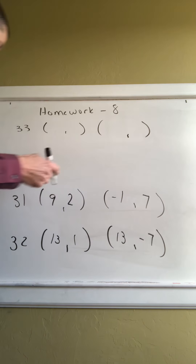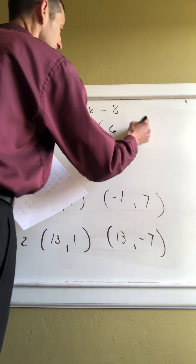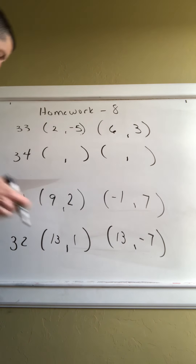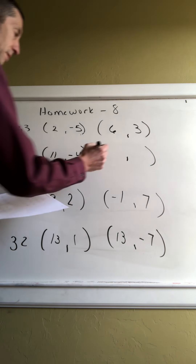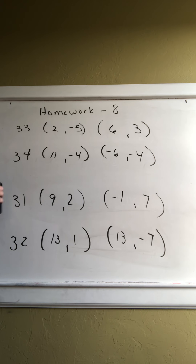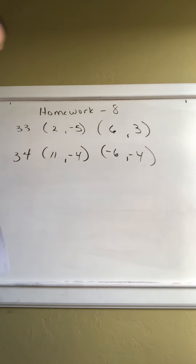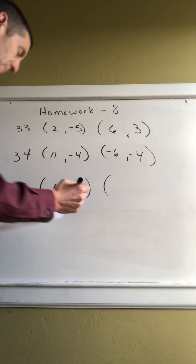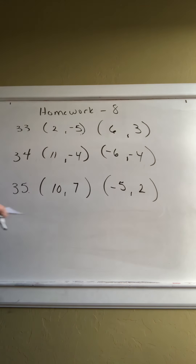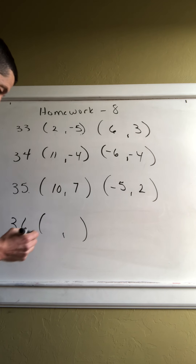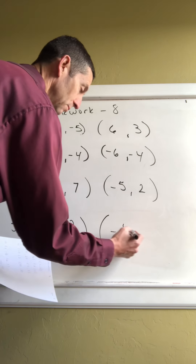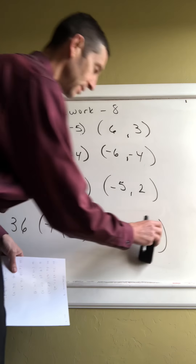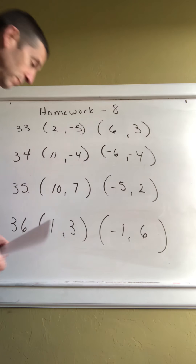Continuing: problem 33 is (2, -5) and (6, 3). Problem 34 is (11, -4) and (-6, -4) — careful there, that's going to be zero or undefined. Problem 35 is (10, 7) and (2, 3). Problem 36 has matching coordinates that will also give you a zero or undefined result, so watch those last two carefully.